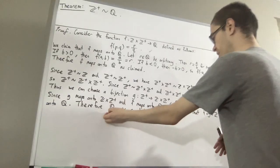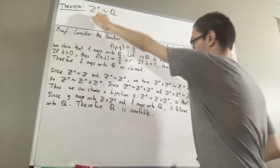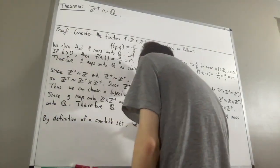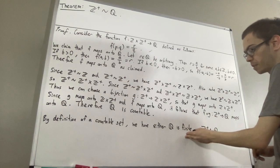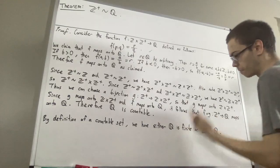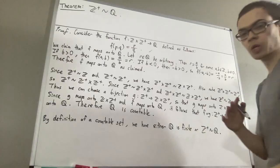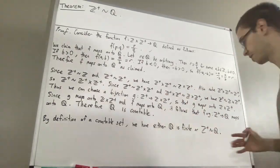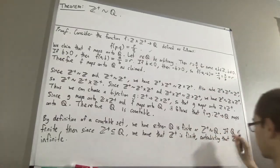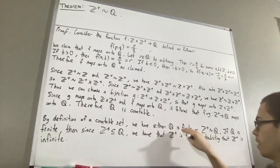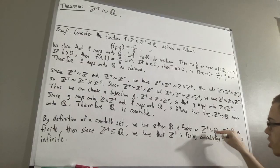By definition, ℚ countable means ℚ is finite or there is a bijection from ℤ⁺ to ℚ. If ℚ were finite, every subset of a finite set is finite, and since ℤ⁺ is a subset of ℚ, that would imply ℤ⁺ is finite — contradicting our result that ℤ⁺ is infinite. So ℚ is not finite, and therefore there must be a bijection from ℤ⁺ to ℚ.